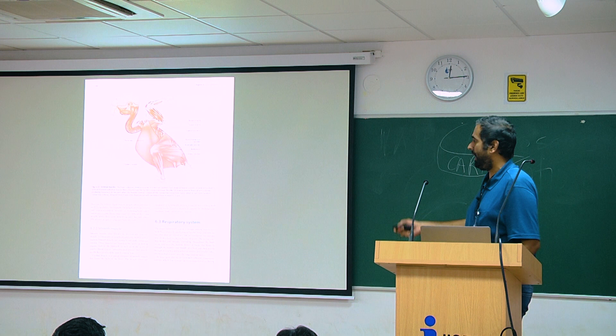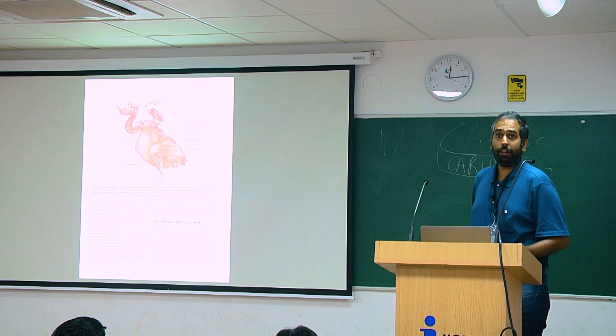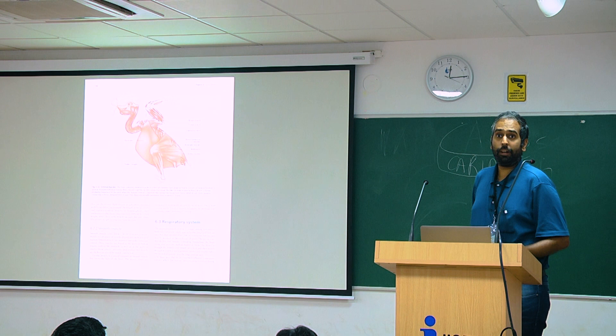Our own pectoral and thoracic muscles are much smaller relative to our size than those of a bird's, because these muscles generate tremendous power. And in order to generate tremendous power, what do they need? Energy. Where are they getting it from? Food.